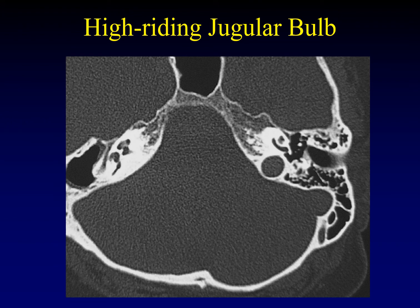Another way the jugular bulb can cause problems is if it extends too superiorly — this is called a high-riding jugular bulb. How high does it need to be? Different authors differ: some say it needs to reach the basal turn of the cochlea, others say the bottom of the internal auditory canal. Either threshold likely qualifies as high-riding, particularly if it corresponds to the side of the patient's symptoms.